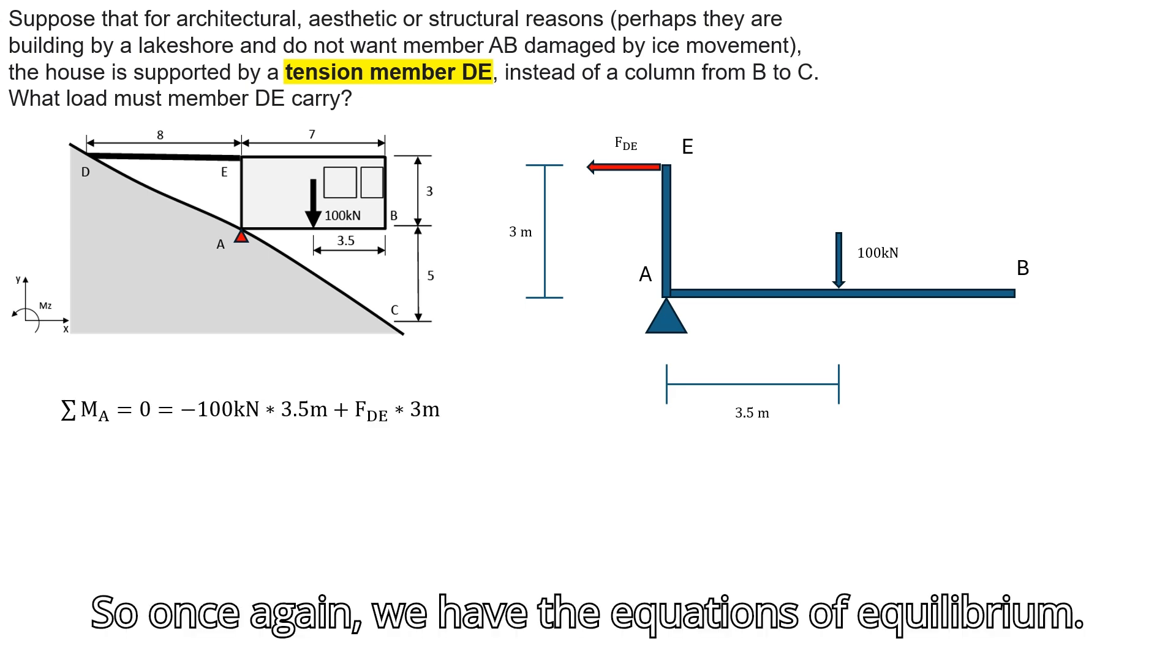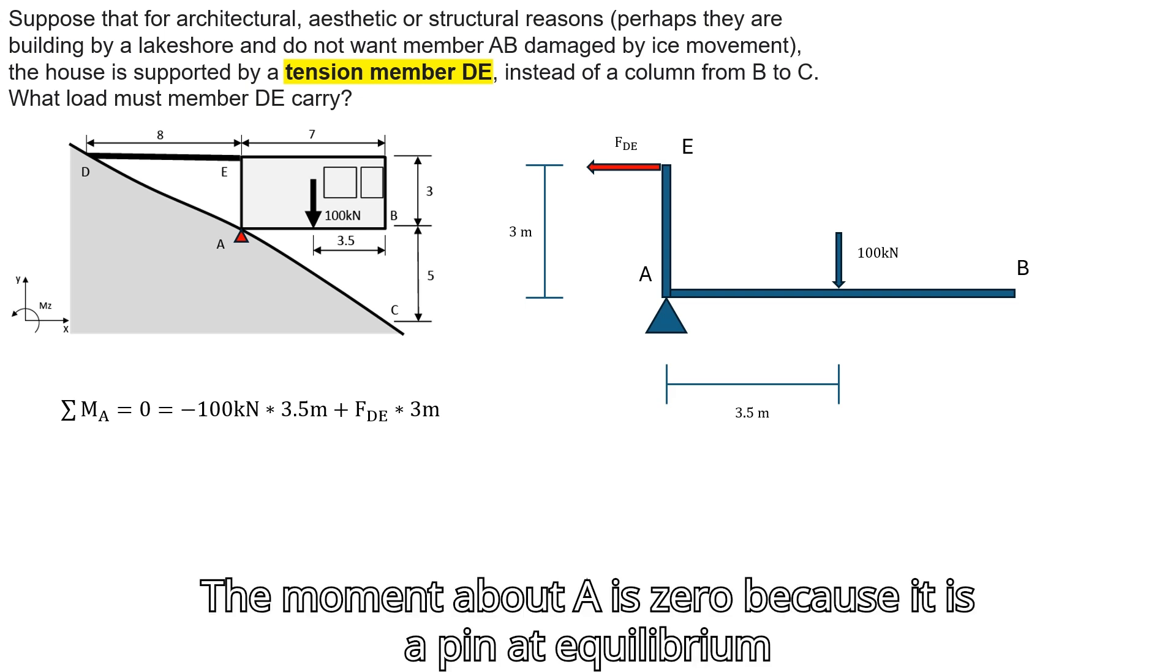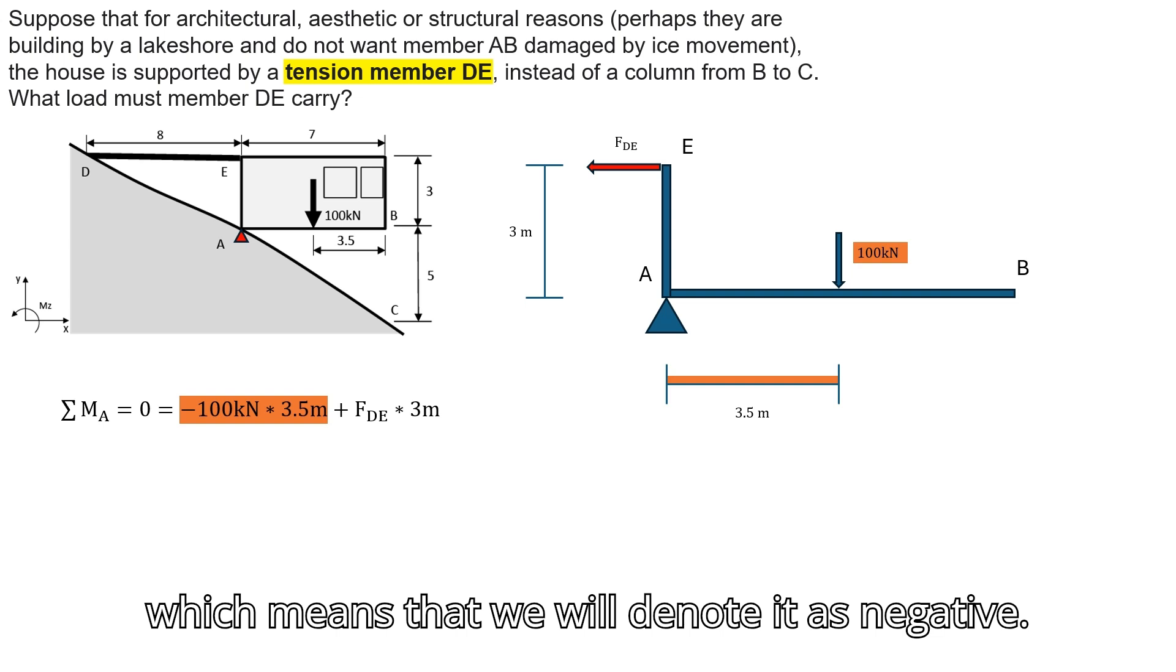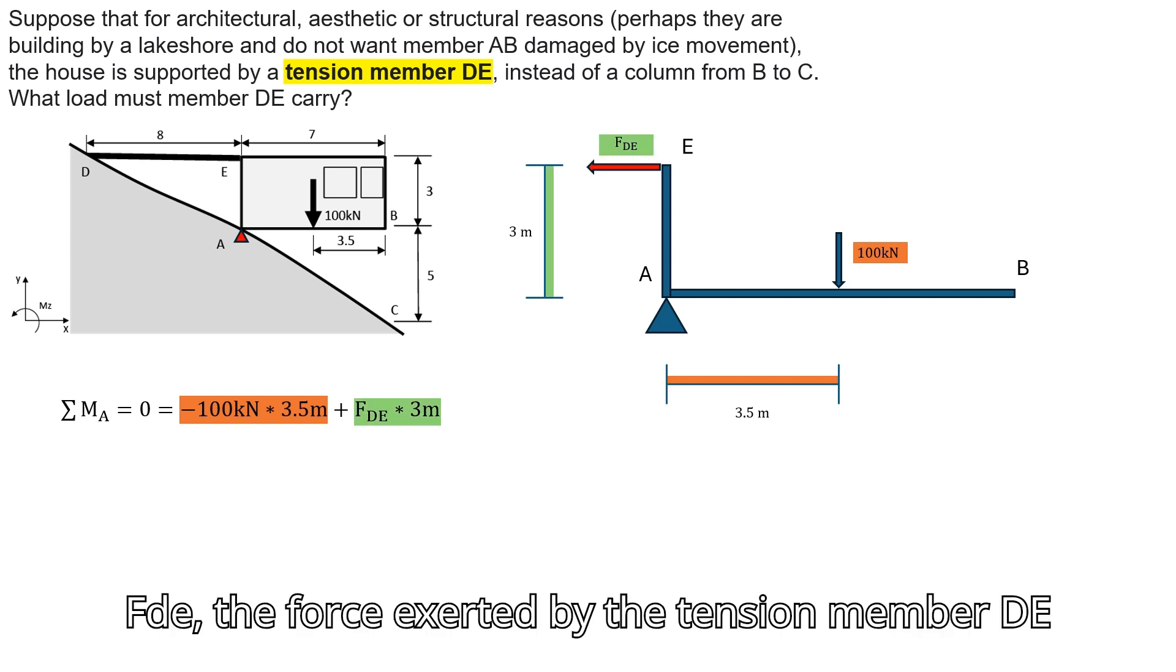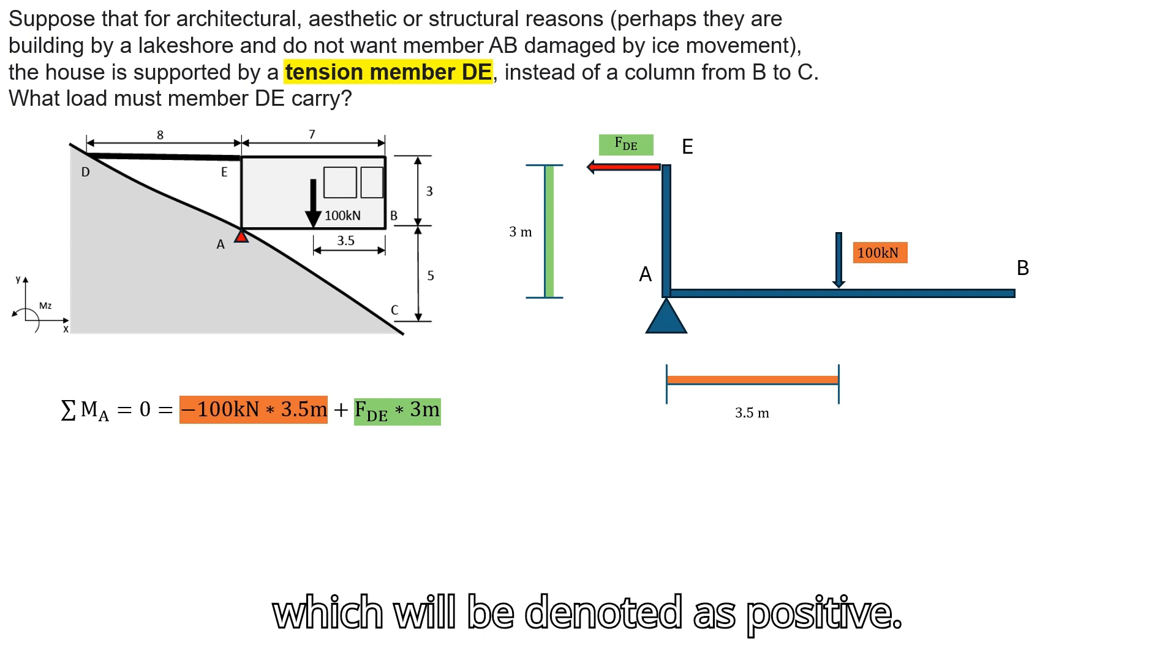So once again, we have the equations of equilibrium. Moment about A is zero because it is a pin at equilibrium. 100 kN at 3.5 meters is going clockwise, which means we will denote it as negative. FDE, the force exerted by the tension member DE, is 3 meters away, going counterclockwise, which will be denoted as positive.